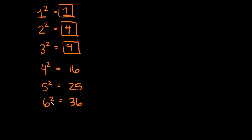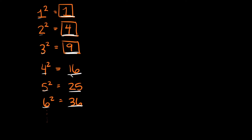The point is all of these numbers are called perfect squares because they're the answer you get when you square a whole number. We squared all of these, so the answers we got are called perfect squares.